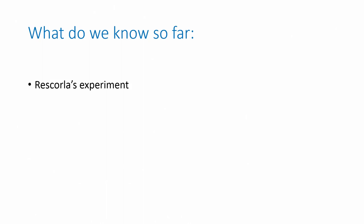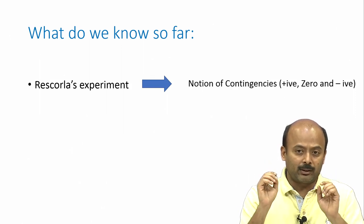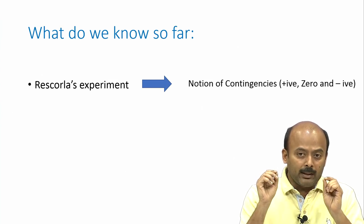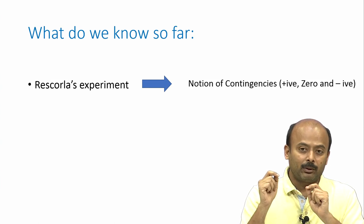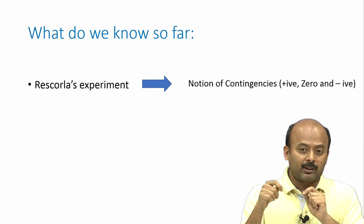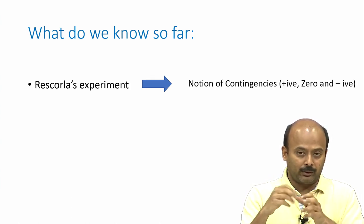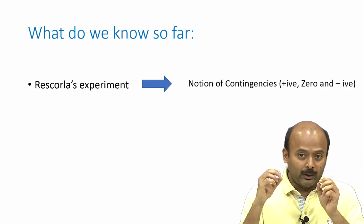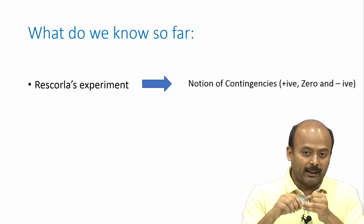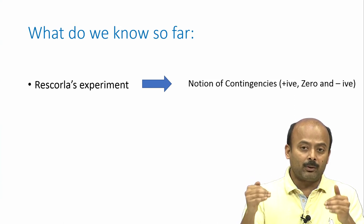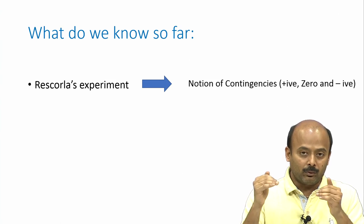In terms of the model, number 1: from Rescorla's experiment we know there is a notion of contingency. We are studying how two different stimuli get related — how an animal learns to establish a relation between two stimuli and modifies its behavior. From Rescorla's experiment we get this notion of contingency: positive, zero, and negative contingency. Any model we develop should be able to explain this experiment and its results naturally.